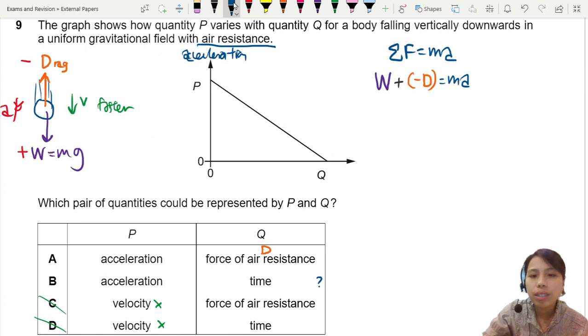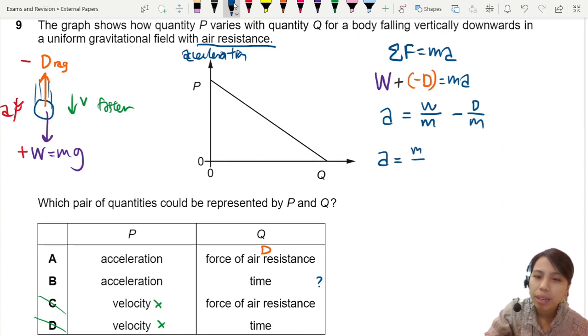We need to arrange acceleration against the other thing. So I think I'm going to put acceleration equals to weight over m minus D over m. Can simplify a bit more. Because weight is mg. Cancel. Nice. This is g minus D over m.